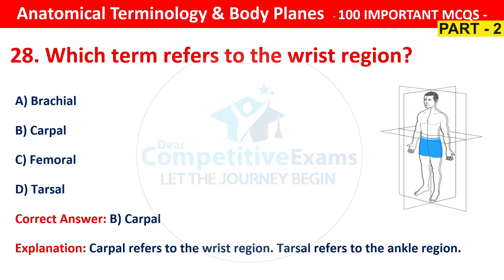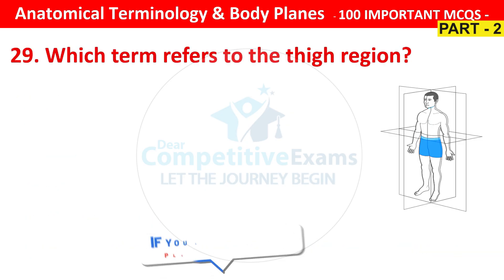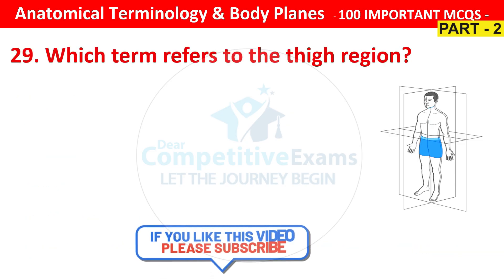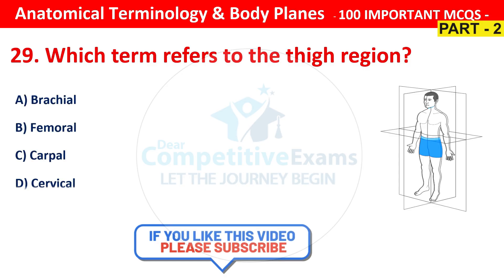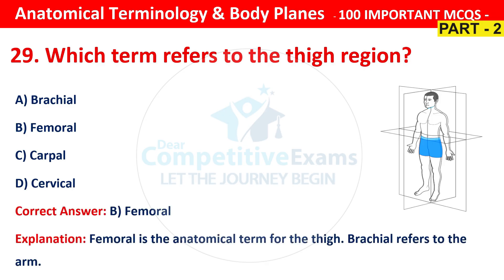Question number 29. Which term refers to the thigh region? Your options are brachial, femoral, carpal or cervical. The right answer is B, that is femoral. Femoral is the anatomical term for the thigh. Brachial refers to the arm.